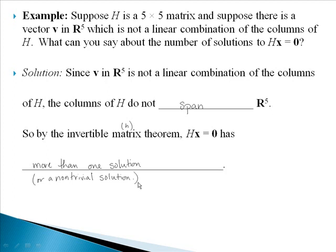Remember that the Invertible Matrix Theorem says if A is invertible, then our homogeneous equation has only the trivial solution. But since we've shown here that H is not invertible — because the columns do not span R5 and V is not a linear combination — then we know that our homogeneous equation has more than just the trivial solution, meaning there's a non-trivial solution. So we're combining part H and part D of the Invertible Matrix Theorem.